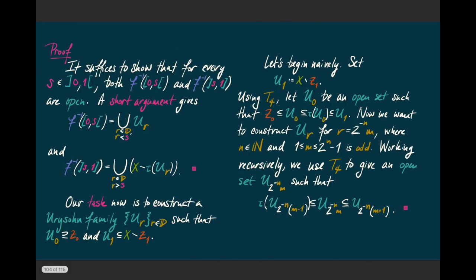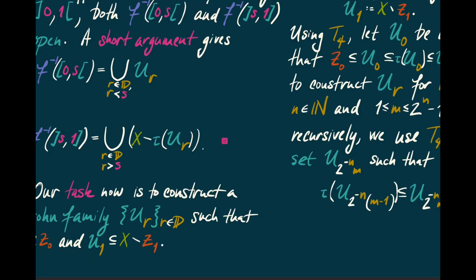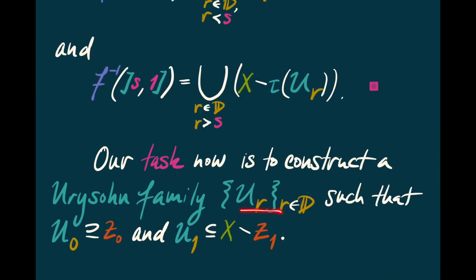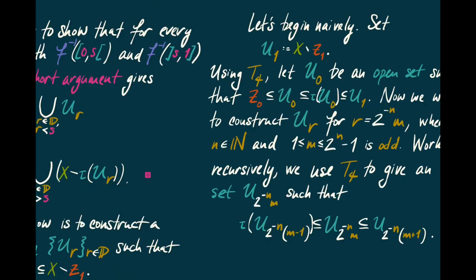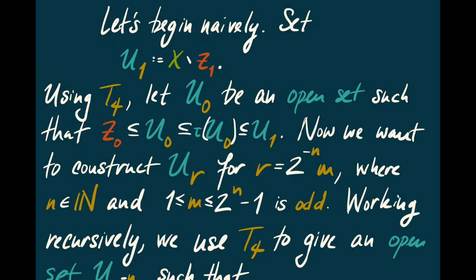My focus now shifts to using the T4 condition to construct the Urysohn family. The goal is to construct U_R such that Z0 — one of my closed subsets — is completely contained in U_0, and U_1 is completely contained in the complement of Z1. The Urysohn family will interpolate between U_0 and U_1. We begin by taking U_1 to be exactly the complement of Z1. Then using T4, we select an open set U_0 such that Z0 is contained in U_0 and the closure of U_0 is contained in U_1.